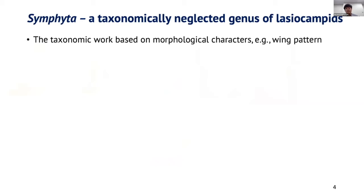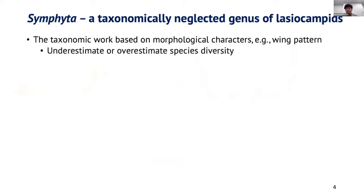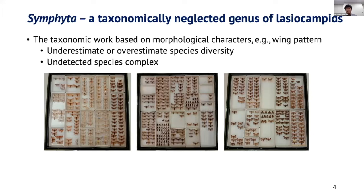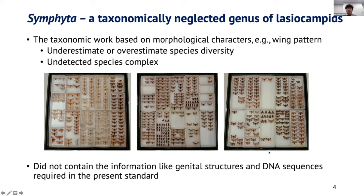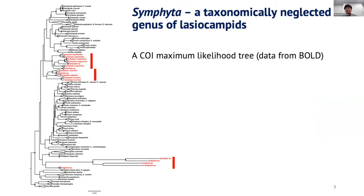The study by Turner in 1924 was based on morphological characters like wing pattern. We know that using morphology to identify species can underestimate or overestimate the number of species and cannot reveal species complexes. For example, we have the collection of all five species, and each species has variations in wing pattern, but we don't know if the variation is just variation within a species or if it is a new species that doesn't fit the original species description. Furthermore, Turner's study did not contain information like genital structures and DNA sequences, which are required by present standards. Some people have since sequenced the CO1 gene from Simphita moths, but they didn't use it to revise the genus.